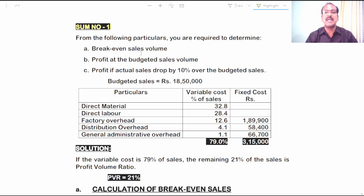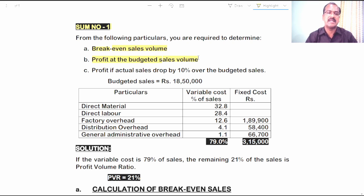Sum number one. From the following particulars, you are required to determine: A. Break-even sales volume. B. Profit at the budgeted sales volume. And C. Profit if actual sales drop by 10% over the budgeted sales. These are the three questions to be answered in this problem.